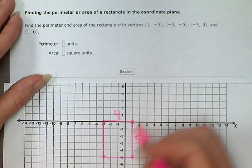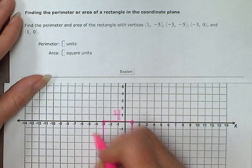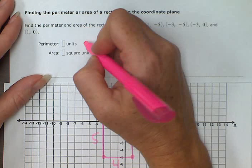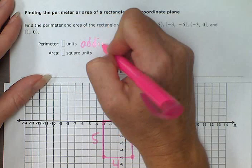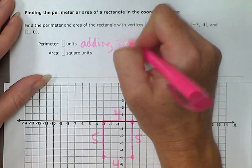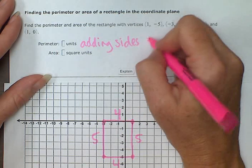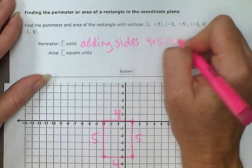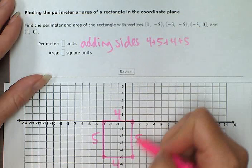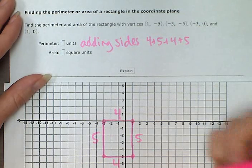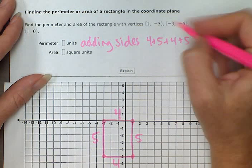we're going to add up all the sides. That's how we find perimeter. This is adding the sides. So 4 plus 5 plus 4 plus 5. That gives us an answer of 18.